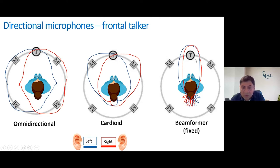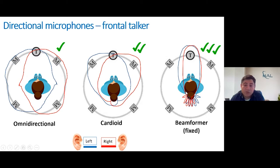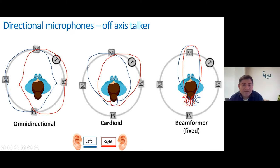Research shows that these arrangements help you understand target speech in noise configurations. Cardioid does slightly better than omnidirectional, and beamformers give a significant improvement in speech understanding in noise because the beamformer focuses more specifically on the target while attenuating pretty much everything else, so the listener has less trouble hearing speech from the target location.